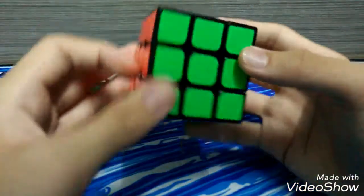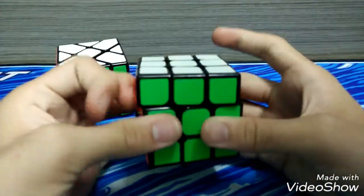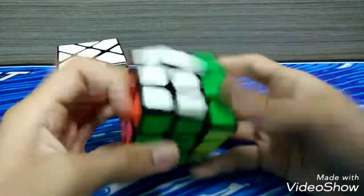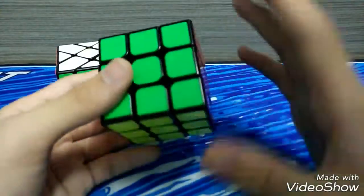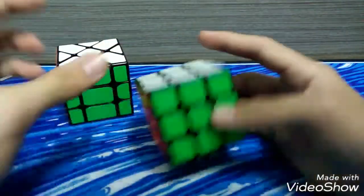And the second cube is YJ Guanlong. Chilong, Sulong, and Yulong also work well, but I find Guanlong is much better and much cheaper on the side.